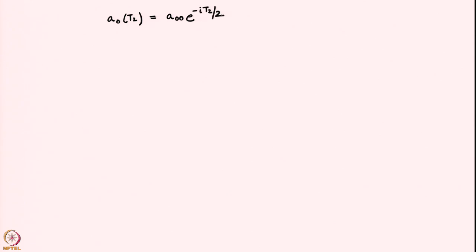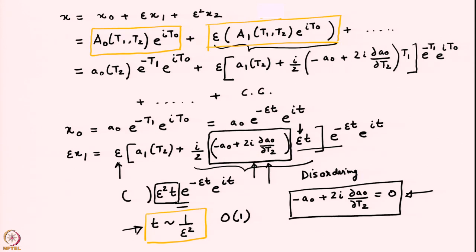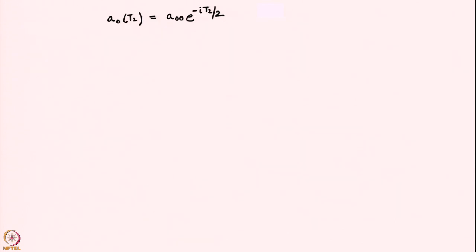One can solve this equation easily, and it leads to the solution: A0 as a function of T2 is some constant of integration. The constant is no longer a function of any other variable because A0 is just a function of T2. So this is a constant times e to the power minus i T2 over 2. This is just the solution to the equation indicated on the previous page — if you integrate that equation, you will find this solution.